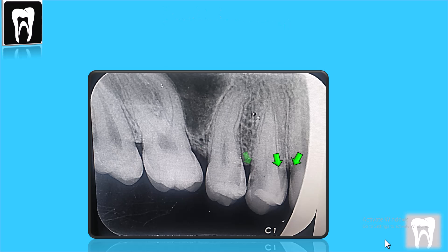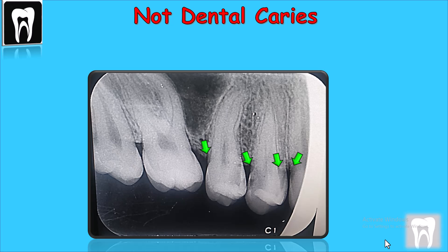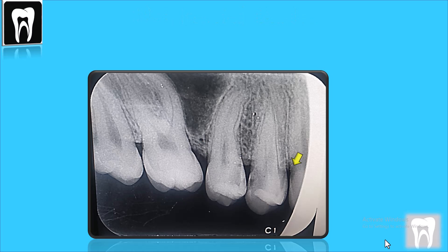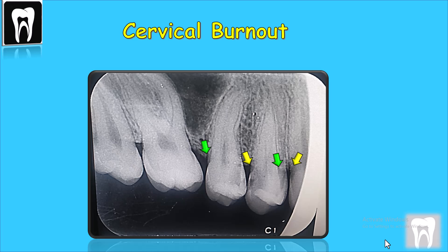These radiolucencies are not dental caries. These two in the canine and the distal of the first premolar are called cervical burnout, and these are due to the depression and the anatomy of the teeth — they can mimic dental caries. You can watch my video on the differentiation between cervical burnout and dental caries by clicking the link above.